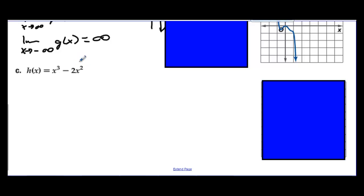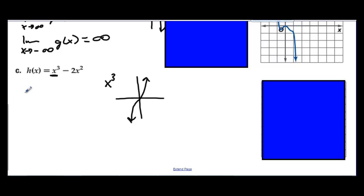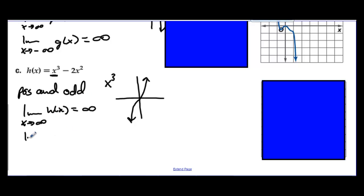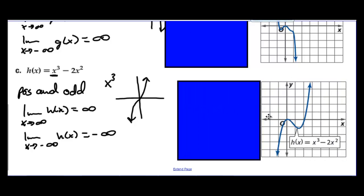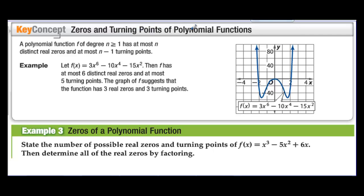For h(x) = x³ − 2x², the leading term is x³. This function on the ends will look exactly like x³. The leading term is positive and odd, so the limit as x approaches infinity of h(x) is positive infinity, and the limit as x approaches negative infinity is negative infinity. A polynomial function of degree n has at most n distinct real zeros and at most n − 1 turning points.